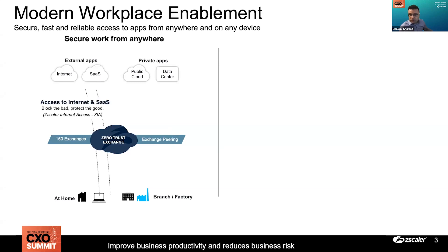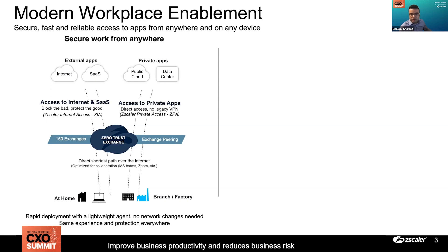Another key tenet of modern workplace enablement is greater user experience. If you provide great security at the expense of user experience, as we heard from our panelists, your end users are going to be unhappy. This is why we built a massive cloud footprint to not only provide secure access to applications, but also the fastest access to the applications that your employees are using for day-to-day business.